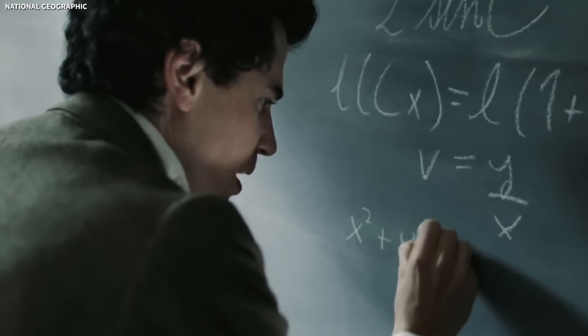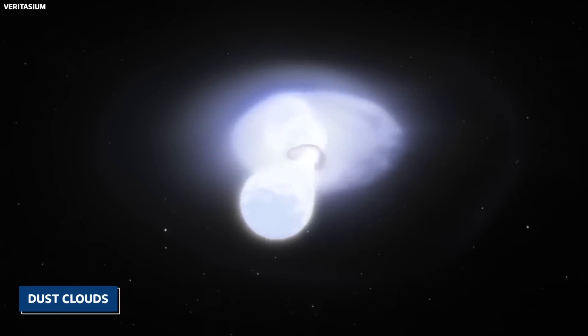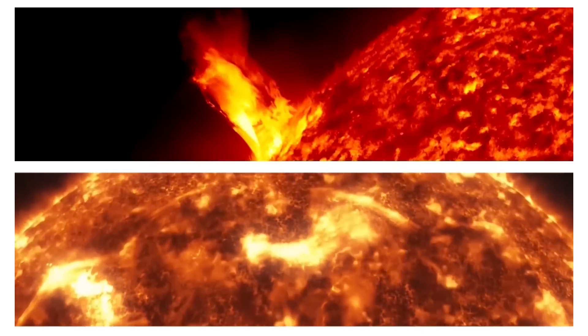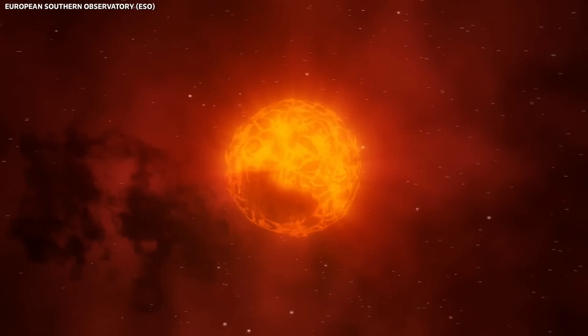Several theories were proposed to explain this phenomenon. One popular theory suggested the presence of dust clouds in front of the star, obscuring its light and causing the dimming effect. As stars like Betelgeuse age, they often shed their outer layers, releasing vast amounts of dust and gas into space.